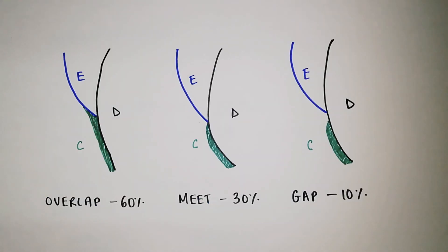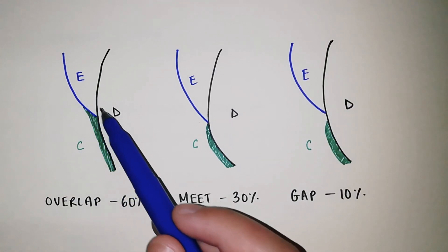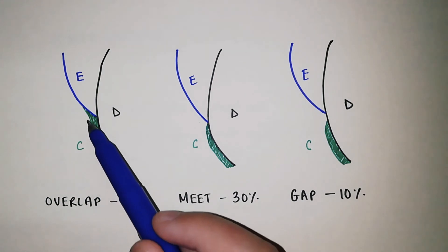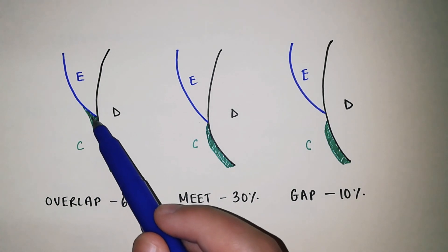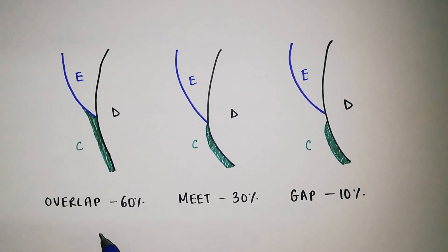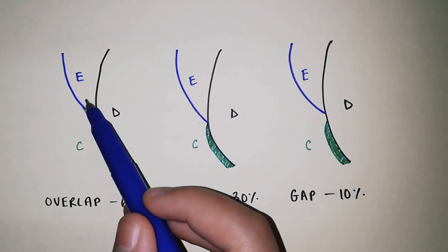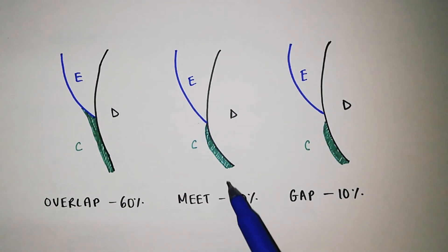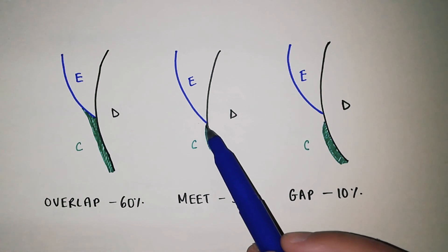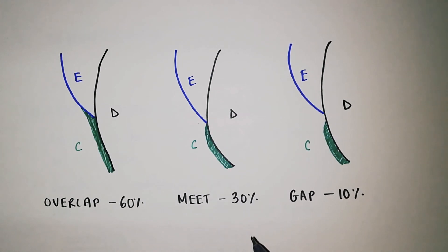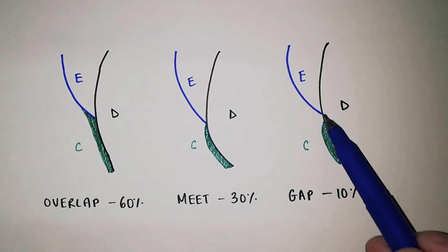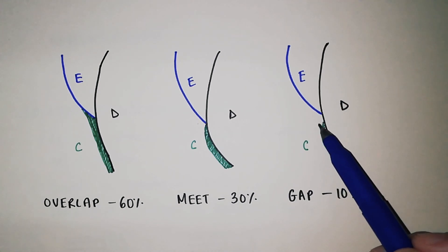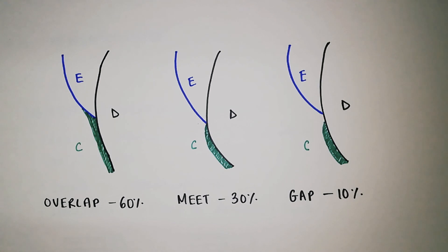As seen in the diagrams, the enamel, dentine, and cementum are labeled at the cemento-enamel junction. In the first diagram there is an overlap between cementum and enamel, accounting for 60% of sections. In the second diagram the enamel and cementum meet at a butt joint, accounting for 30% of sections. In the third diagram there is a gap between cementum and enamel, causing the dentine to be exposed, which increases dentine sensitivity.